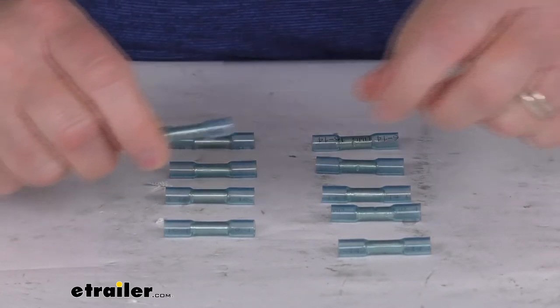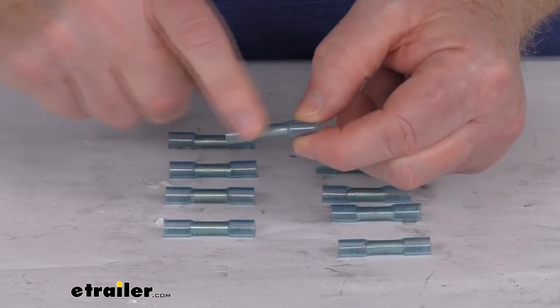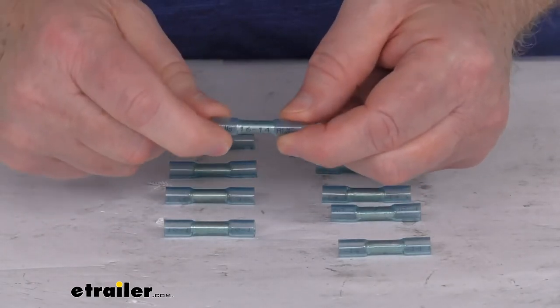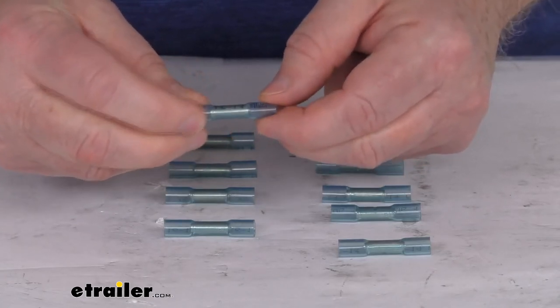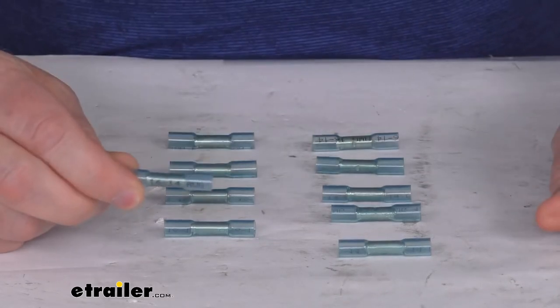Once you have a good connection, take a heat source like a heat gun and apply heat over this whole insulation. That'll cause this heat shrink insulation to completely shrink and seal around the connection and prevent the elements from causing any problem with your wire connection.